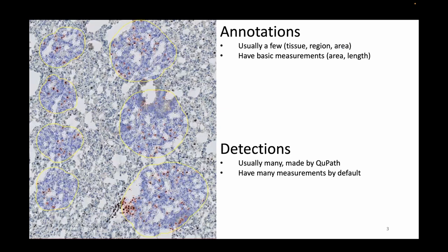Just a quick reminder: there are two major kinds of objects you'll be interacting with in QPAD. There are annotations — usually a few of them — those could be your regions, tissues, or areas, and they come free of charge with basic measurements such as area and length. Detections, on the other hand, are made by QPAD; there are many, they have many measurements by default, but you cannot edit them — you can edit your annotations.